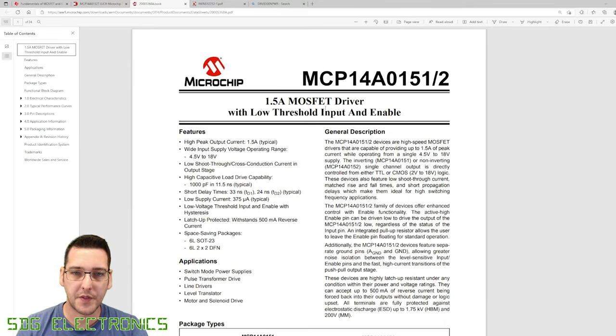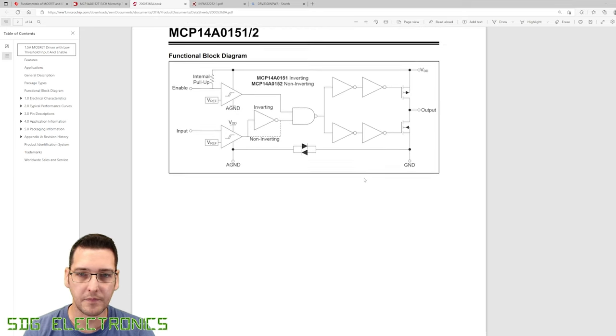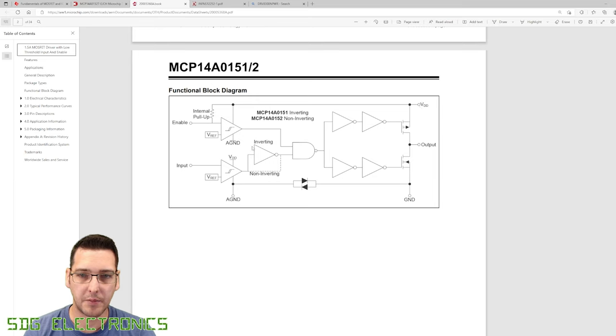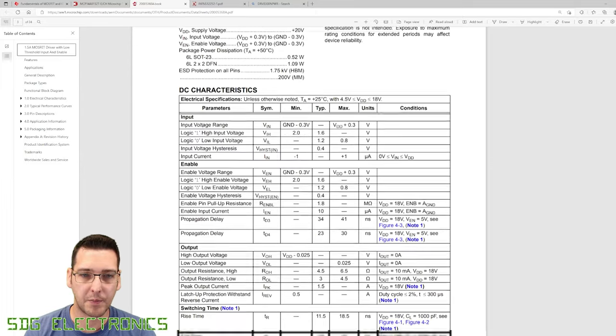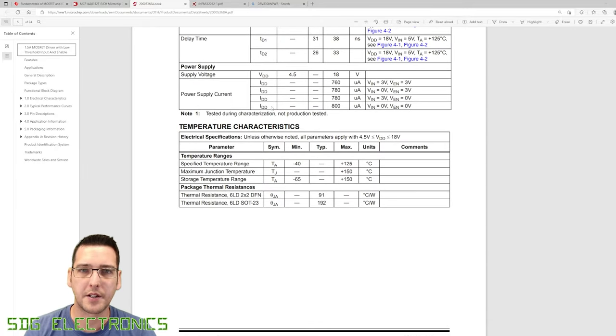So 1.5 Amp MOSFET driver. So that would definitely give us a very fast switching time. Wide input supply voltage range 4.5 to 18 volts. Now, I do actually have 12 volts available on the riser board. So I think we'll drive the gate with that 12 volt supply. We should be able to feed it directly into this. And this is what the internal block diagram looks like. So we've got this totem pole driver here. And we've just got an enable and an input. So pretty straightforward device. But it's a little bit on the pricey side. So I'm just going to have a quick look at some of the other providers, maybe from Mouser, and just see if they've got anything else.